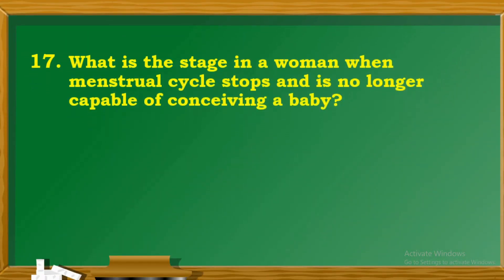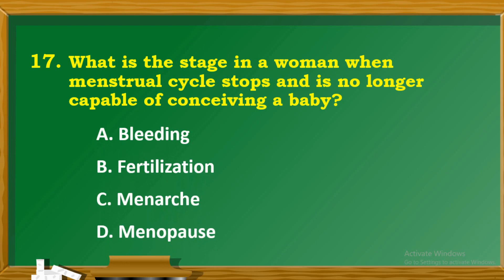Question 17: What is the stage in a woman when the menstrual cycle stops and she is no longer capable of conceiving a baby? A. Bleeding. B. Fertilization. C. Menarche. D. Menopause.